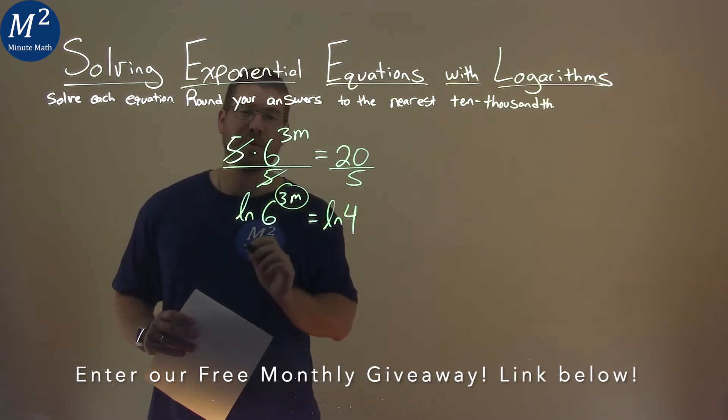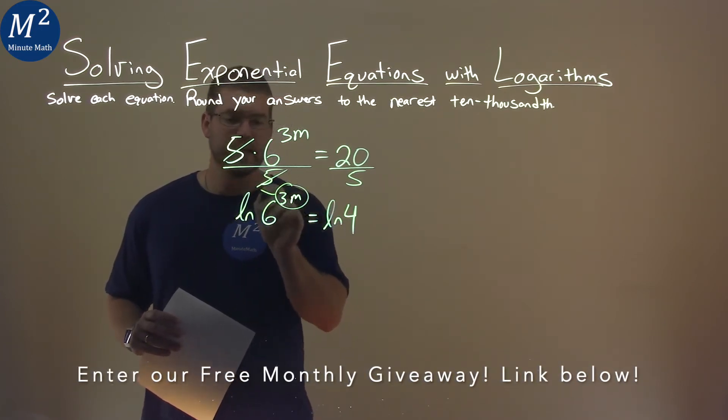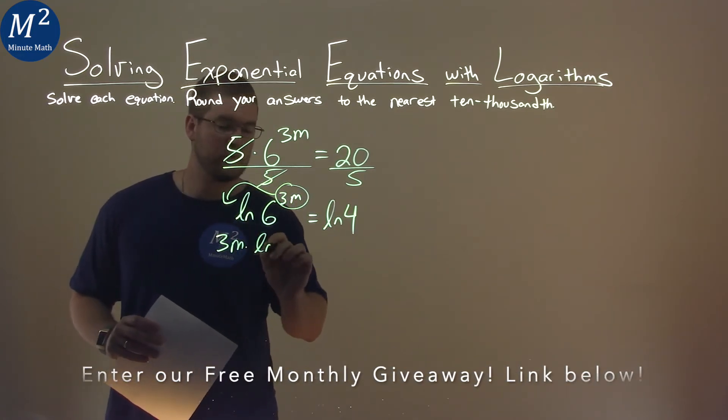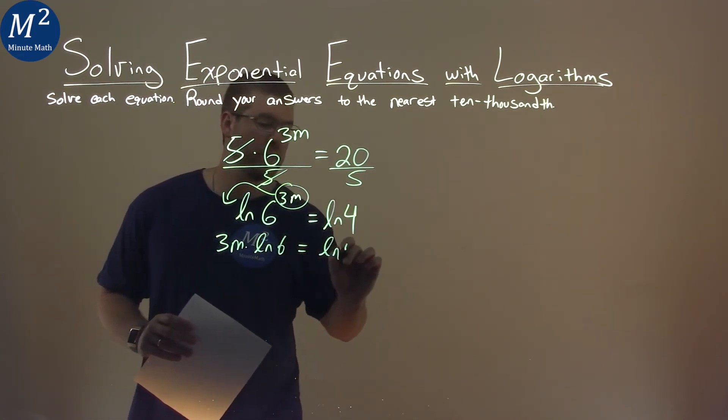With that being said, our exponent 3m, the power, can come out front with multiplication. So we have 3m times natural log of 6 is equal to natural log of 4.